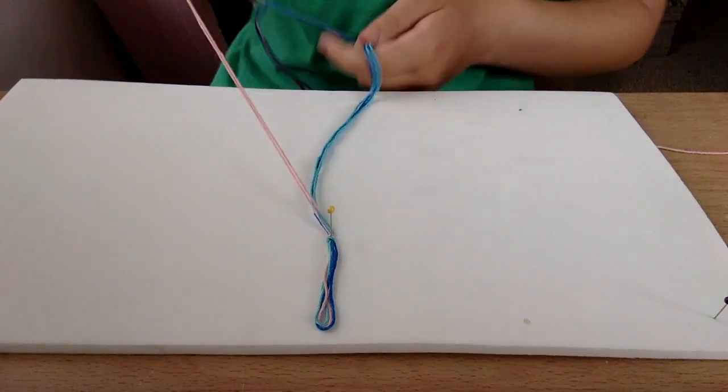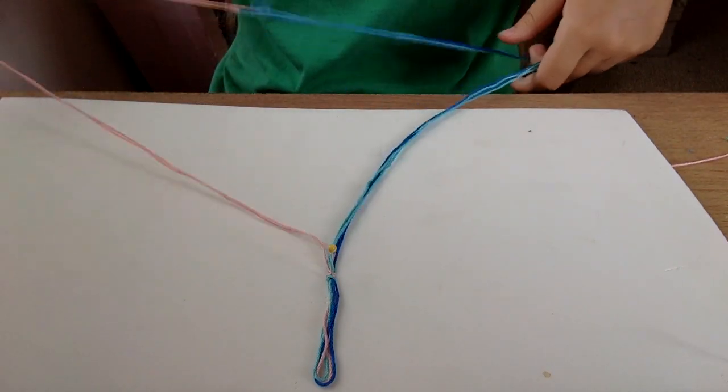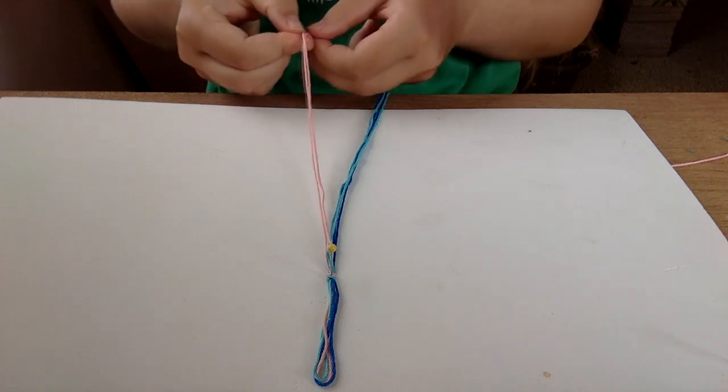Now, the key for Chevron friendship bracelets is that they have to be symmetric on either side. That's what makes them look like a Chevron. And that is also why we have pairs of colors.